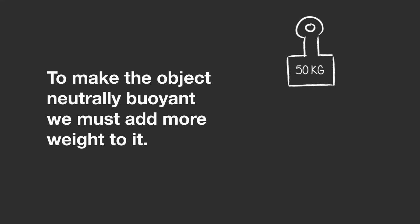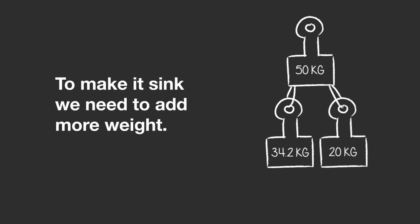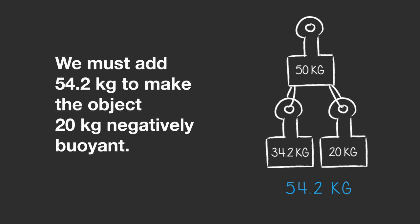To make this object neutrally buoyant we need to add more weight to pull the object down. We need to add 34.2 kg so that the object weighs the same as the water it displaces. If we want to make it sink, we need to add even more. For example, to make it 20 kg negatively buoyant we would need to add an extra 20 kg on top of the 34.2 kg already added: 34.2 kg plus 20 kg equals 54.2 kg in total.